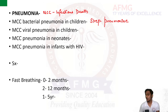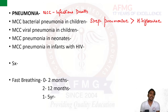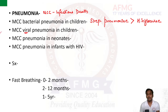If they ask you the second most common cause, or if Streptococcus pneumoniae is not an option, then your answer should be Haemophilus influenzae. The next one-liner: the most common cause of viral pneumonia in children is RSV, that is Respiratory Syncytial Virus.